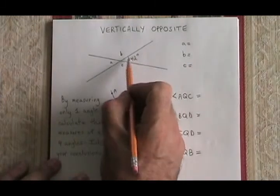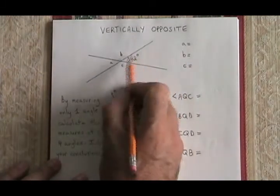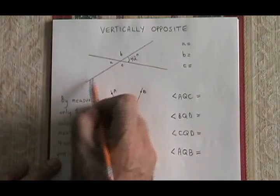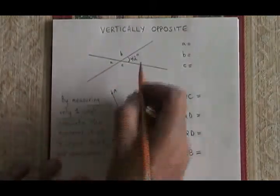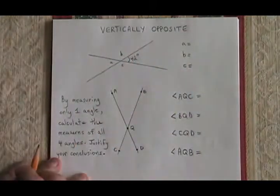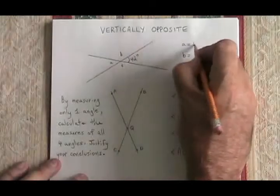That means this 42 degree angle has to be equal in measure to this angle A over here. Because the lines are straight, this has to happen. So angle A equals 42 degrees.